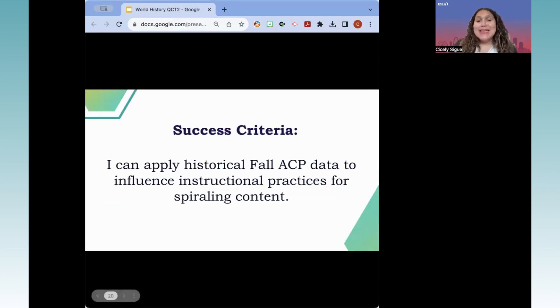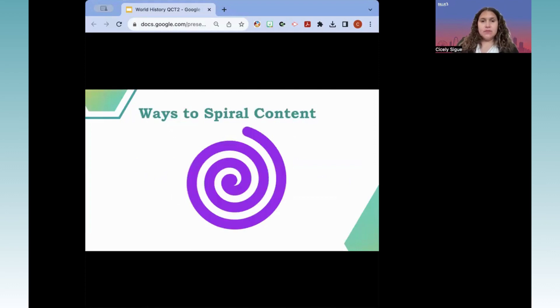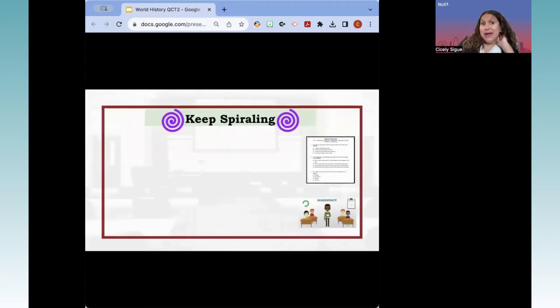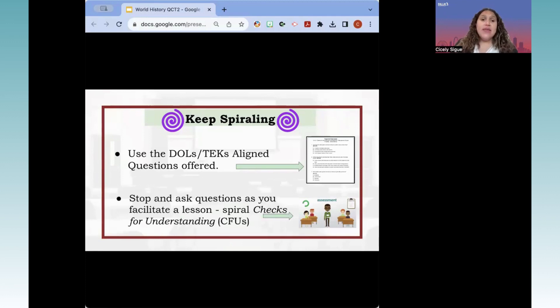All right, now we should all be able to apply historical fall ACP data to influence instructional practices for spiraling content. If you need to take a brief break, five minute, 10 minute break, definitely do so. Now that we have looked at how it's been assessed, we've looked at the why, we've looked at the data, and we've seen the historical past so that we can break those trends, let's now go into ways to spiral content. World history is so broad. It's so much information. Let's dive into some possible ways. The district has TEKS-aligned questions that are offered and provided, which embed and include questions that are often spiraled, as well as DOLs. Another way that you can do in-the-moment in the classroom spiraling is through stopping and asking questions or checks for understanding, using those engagement strategies just to go ahead and check and make sure students are making connections along the way.